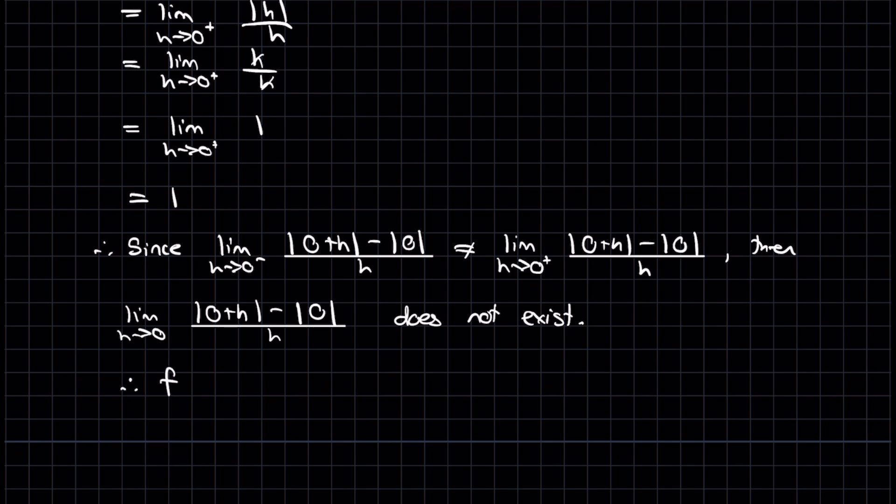And so therefore, f(x), which is the absolute value of x, is not differentiable, I'll abbreviate to diff, at x equal to 0. And that's the end of our problem.